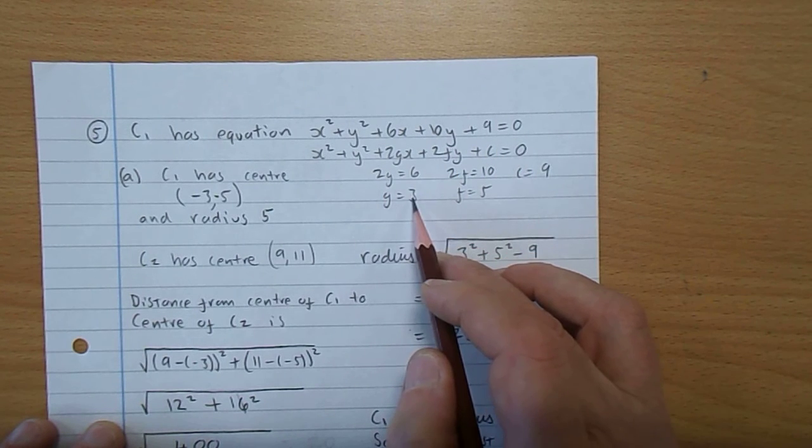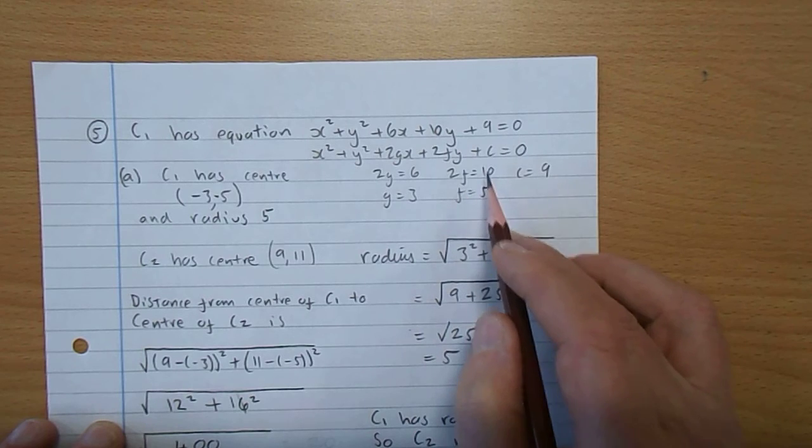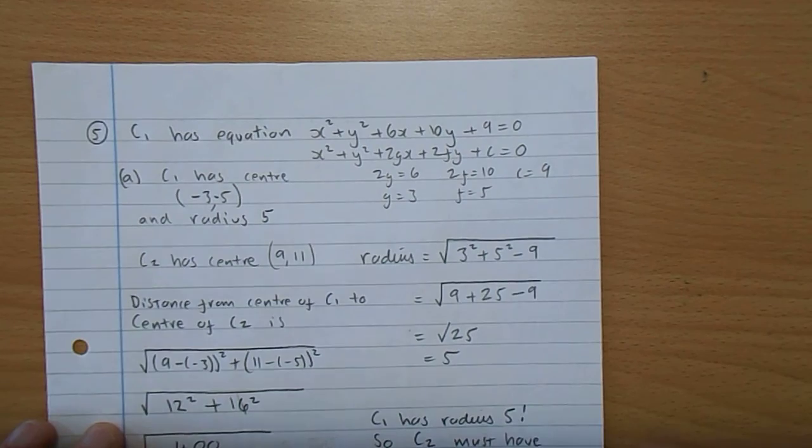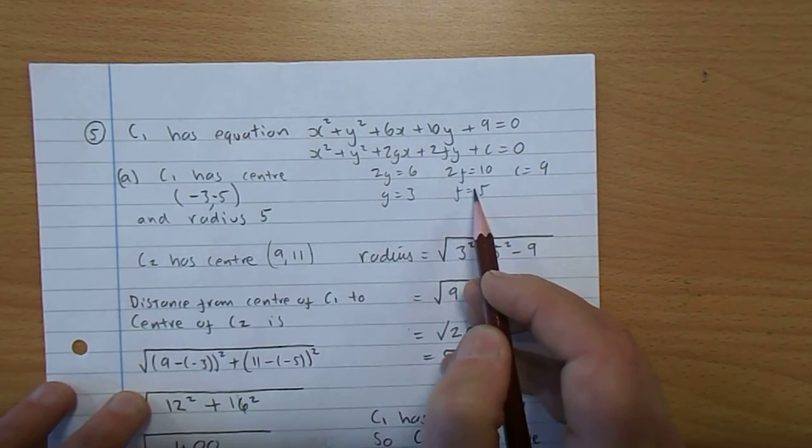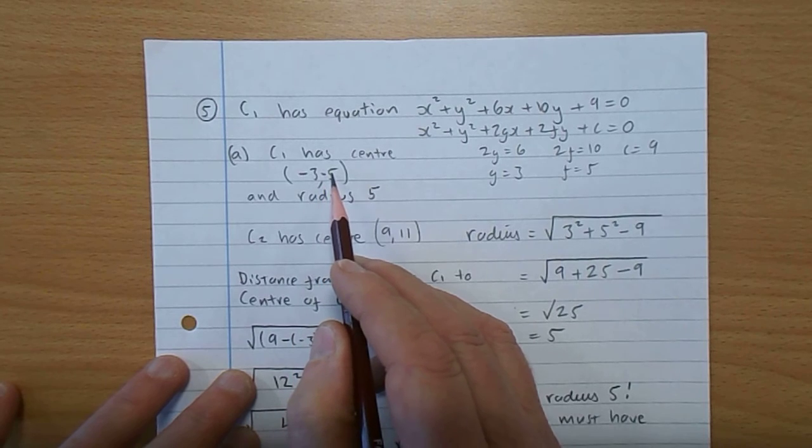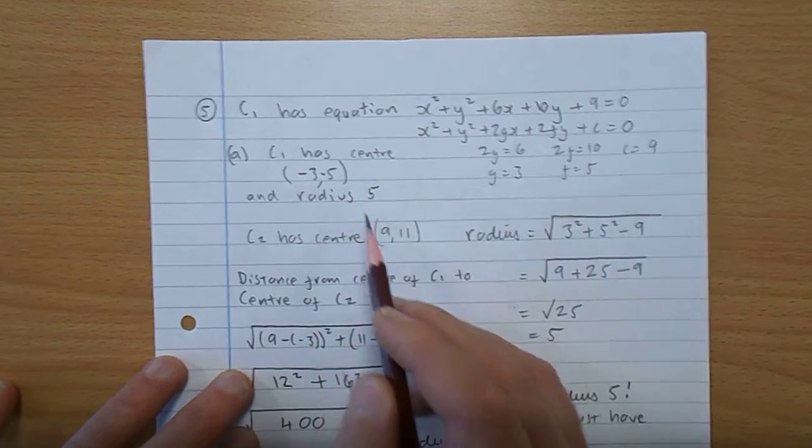2g is 6, so g is 3. 2f is 10, so f is 5 and C is 9. The centre is minus g minus f, so C1 has centre minus 3 minus 5